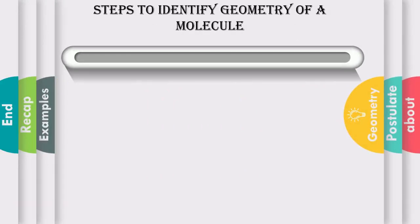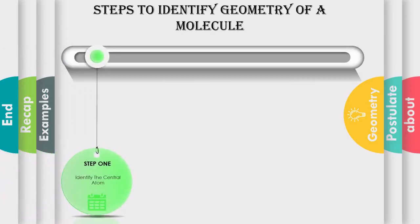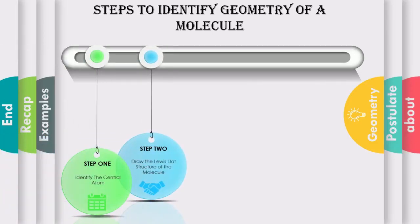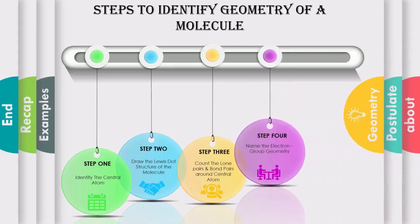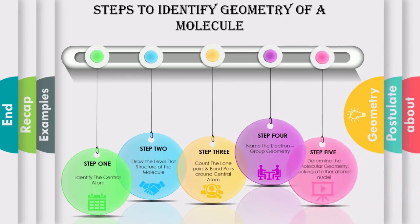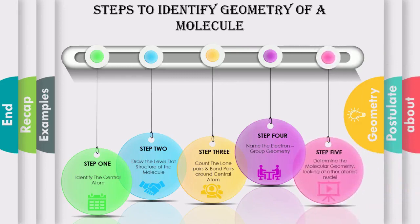After the postulates, we need to know the steps to identify the geometry of a molecule. Step one: identify the central atom. Step two: draw the Lewis structure of the molecule. Step three: count the lone pairs and bond pairs around the central atom. Step four: name the electron group geometry of the molecule. Step five: determine the molecular geometry or shape of the molecule.